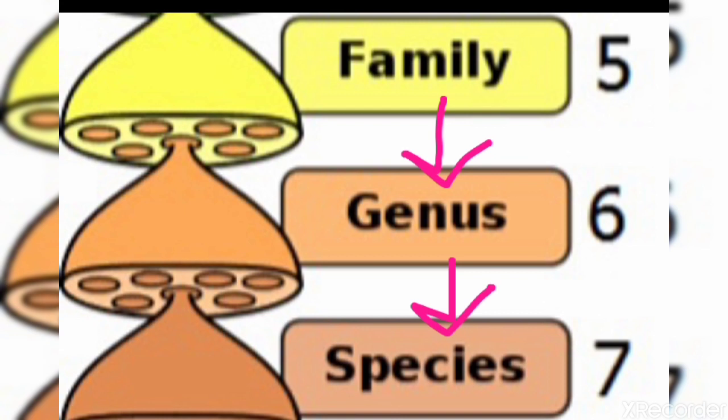We can take the example of human beings. If we see the structures of our hands or legs, they are the same. Members of a species resemble each other very closely, and members of a species reproduce among themselves.